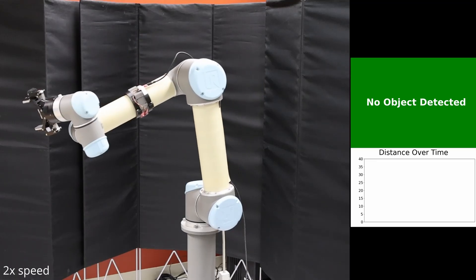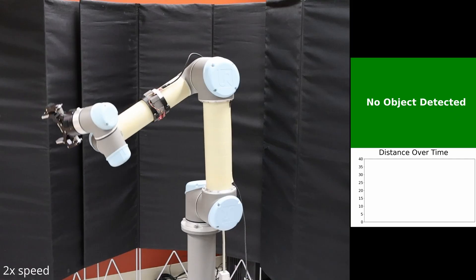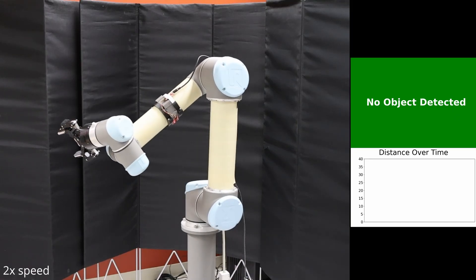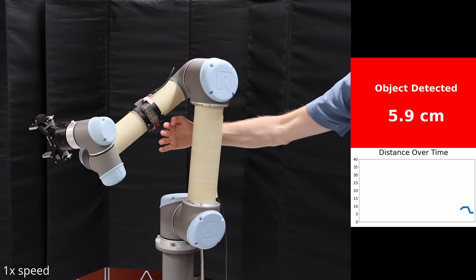Again, in this configuration, the robot is not detected regardless of joint state. But when an unknown object enters the field of view of the sensor, it is detected and localized.